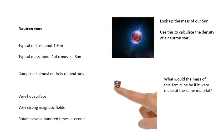Look up the mass of our sun, use the data I've given on the left to calculate the density of a neutron star. Typical exam question: what would the mass of this little one centimeter cube be if it were made of the same material? Pause the video, have a go at that, and you should get something like that. The numbers obviously might be slightly different depending on the radius that you're given in the exam.